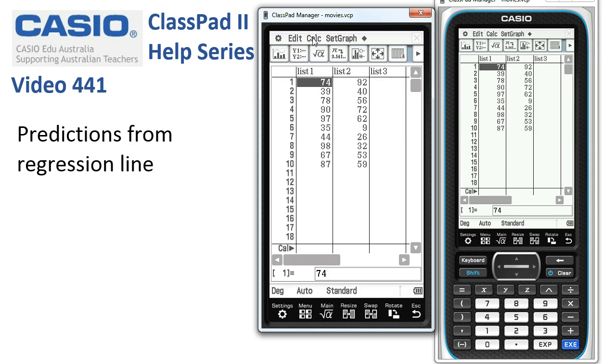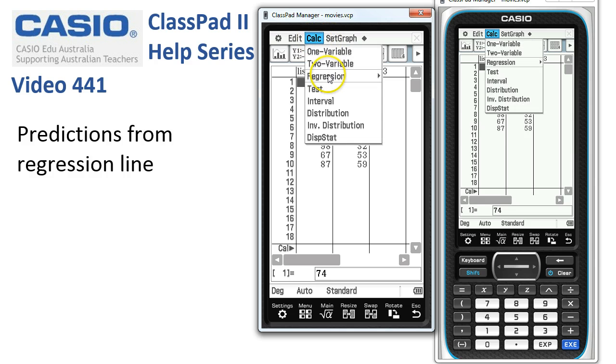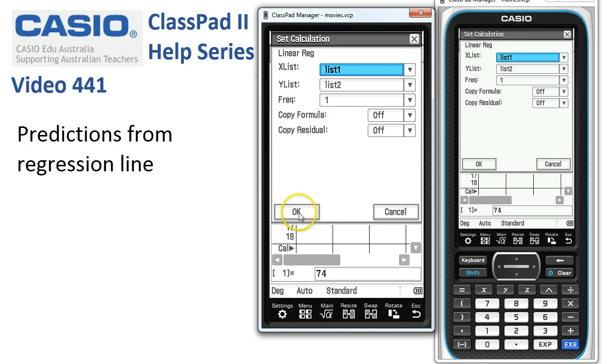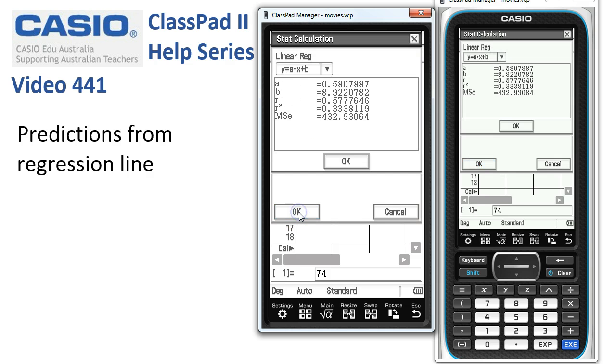We've entered our paired data here for births and deaths for paired suburbs. We're going to go straight to Calc, Regression, Linear Regression, and say OK because everything's good. The equation of our regression line is displayed as soon as we tap OK.